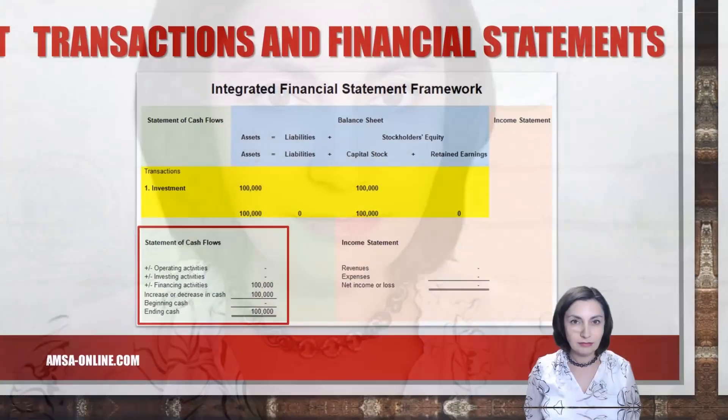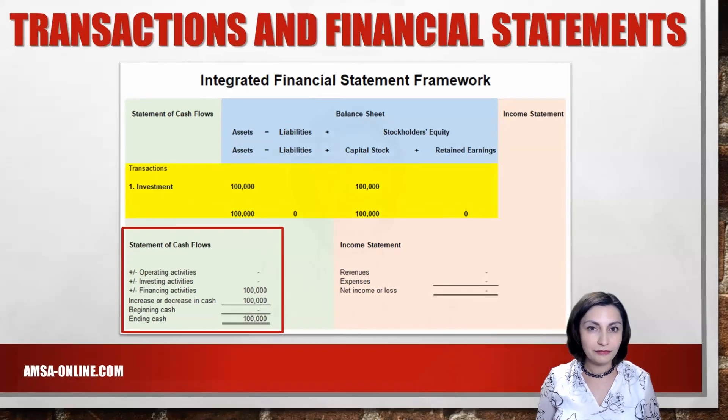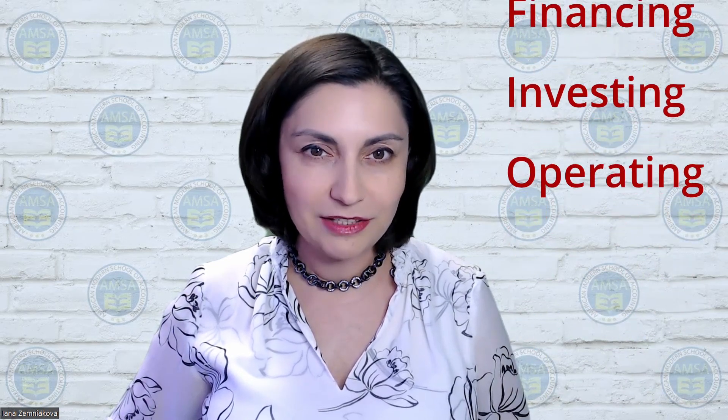Cash flows from financing activities include cash flows related to borrowing and stockholders' equity. Therefore, cash flows from financing activities will increase by $100,000 under the statement of cash flows column. The statement of cash flows reports the change in financial condition due to the changes in cash during the period. It is organized around the three business activities of financing, investing, and operating. Any changes in cash must be related to one or more of these activities. To learn more, watch my video called Business Activities — I'm posting the link here and in the description below.